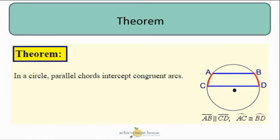And last but not least, if the two chords, so AB and CD there, are parallel, then they are going to intercept congruent arcs. So arc AC would be congruent to arc BD.